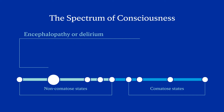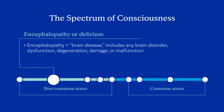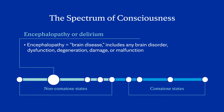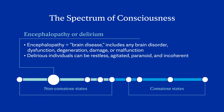Next is encephalopathy, or delirium. Encephalopathy encompasses any brain disorder, disease, dysfunction, degeneration, damage, or malfunction. Delirious individuals can be restless, agitated, paranoid, and incoherent, and they may hallucinate and have a rapid heart rate and wide pupils.